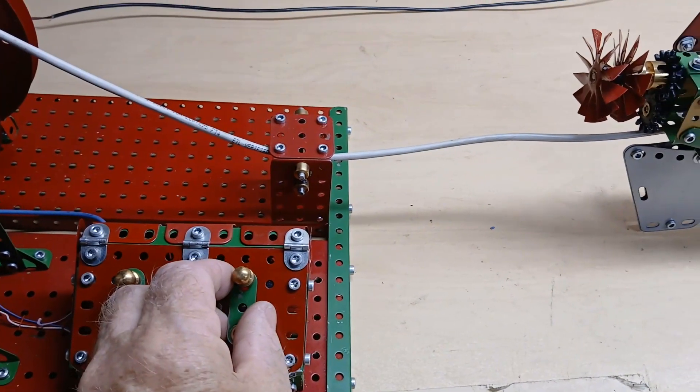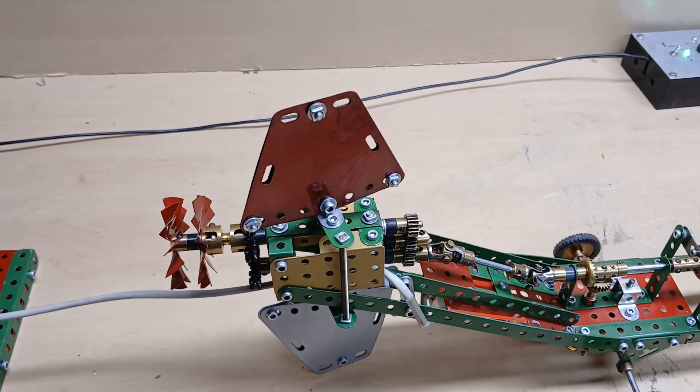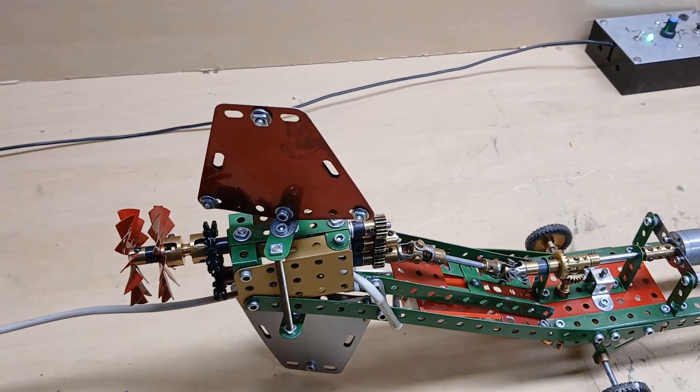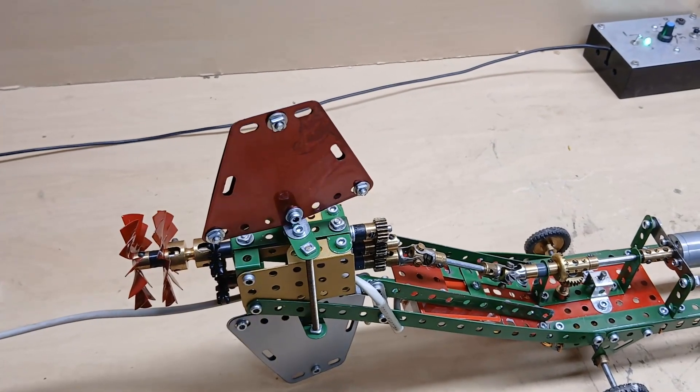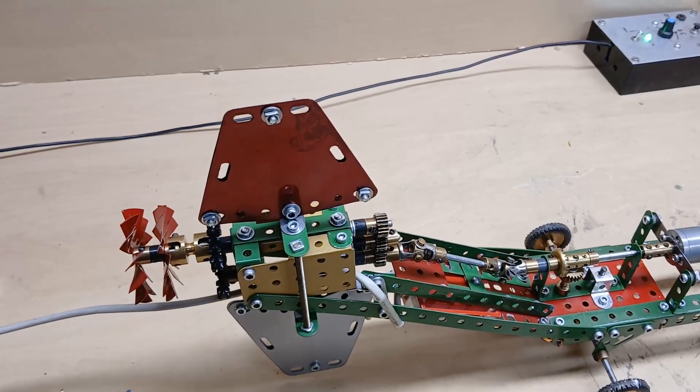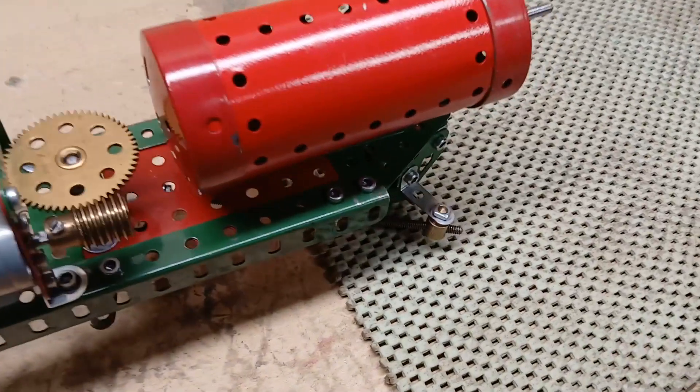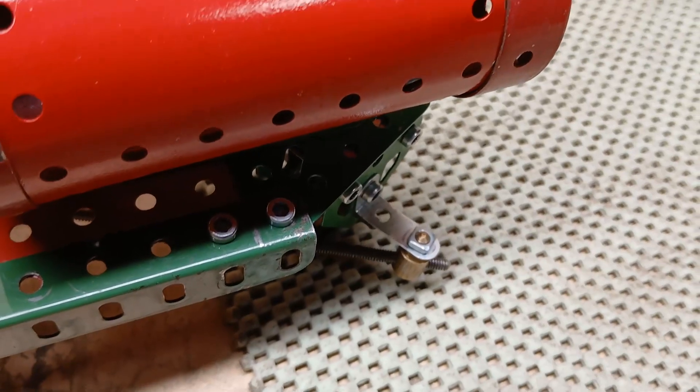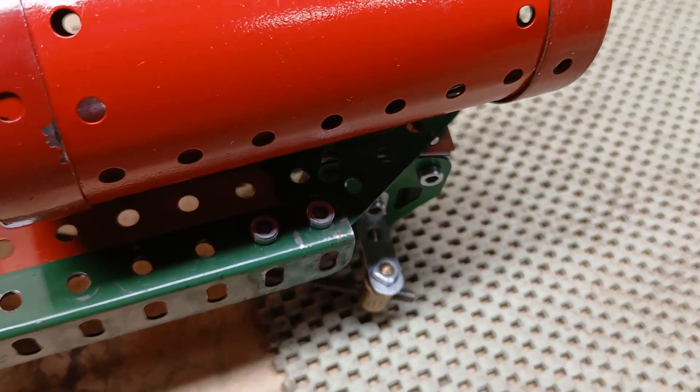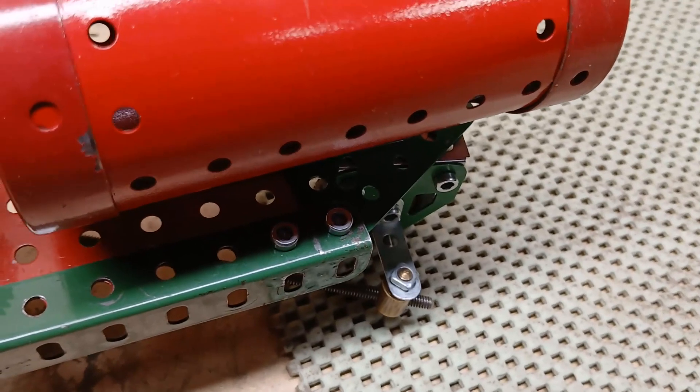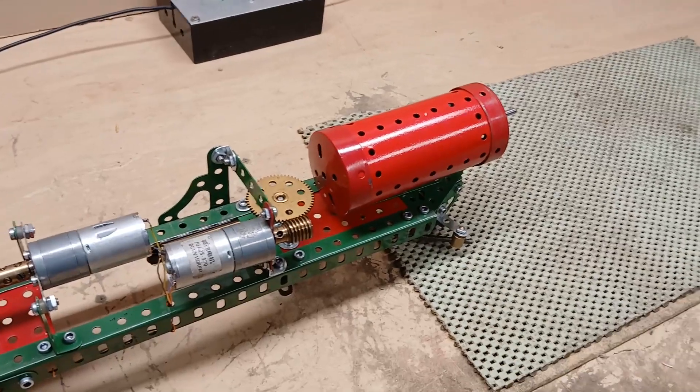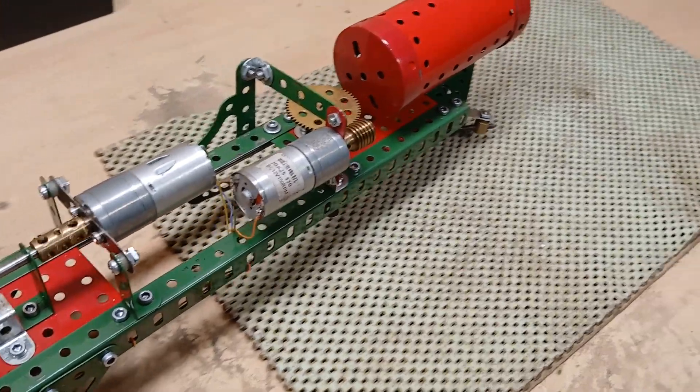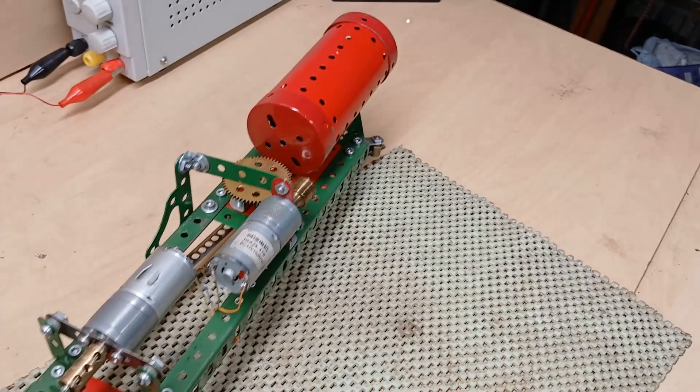This switch steers the torpedo, moving the rudder and also the steerable front wheel. We'll steer it to the left. There we go.